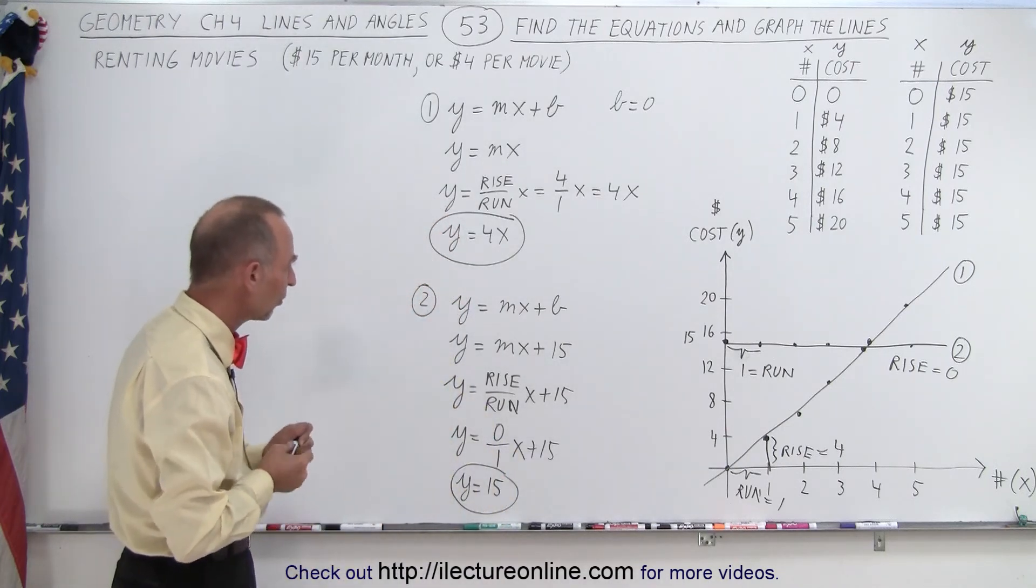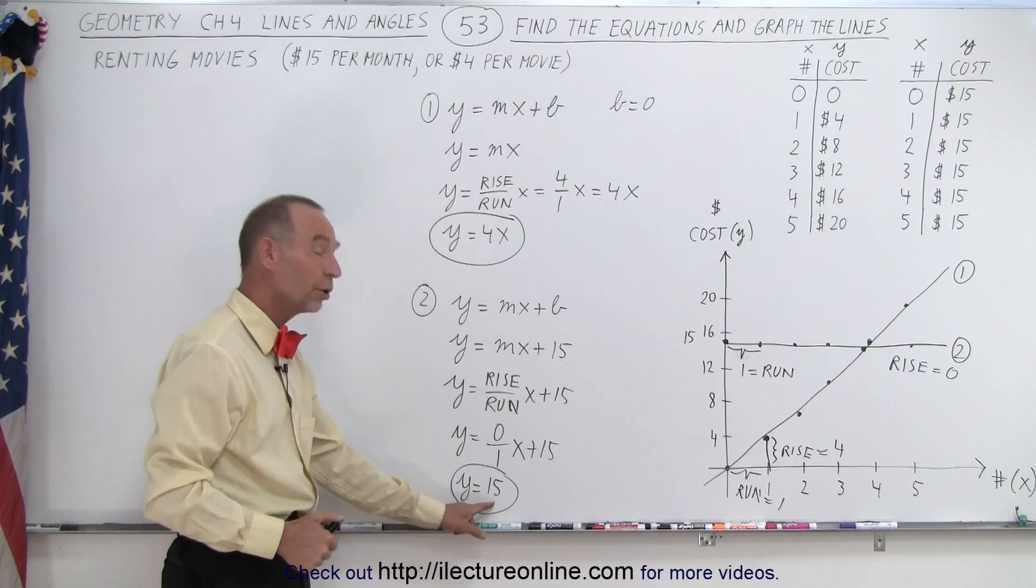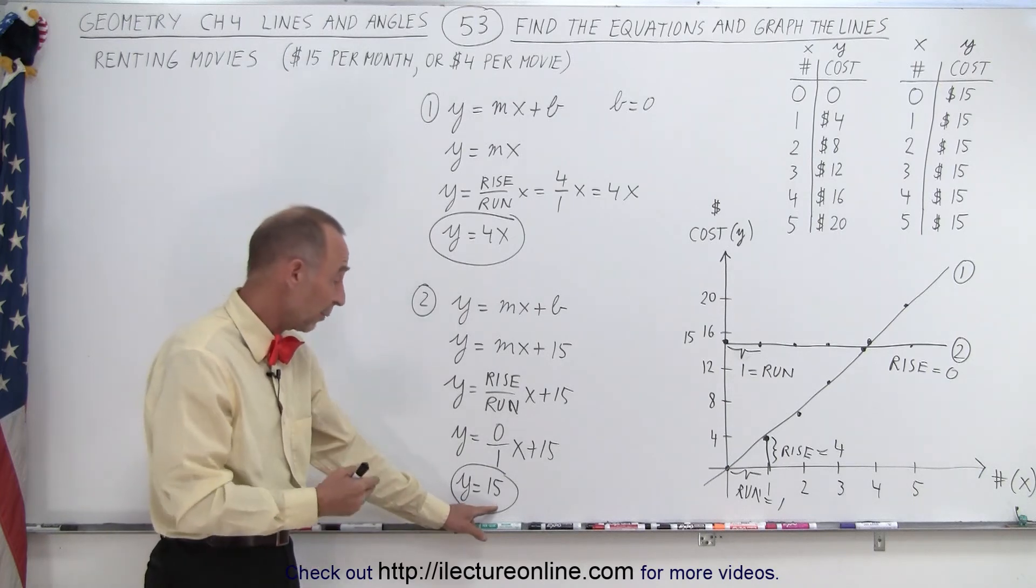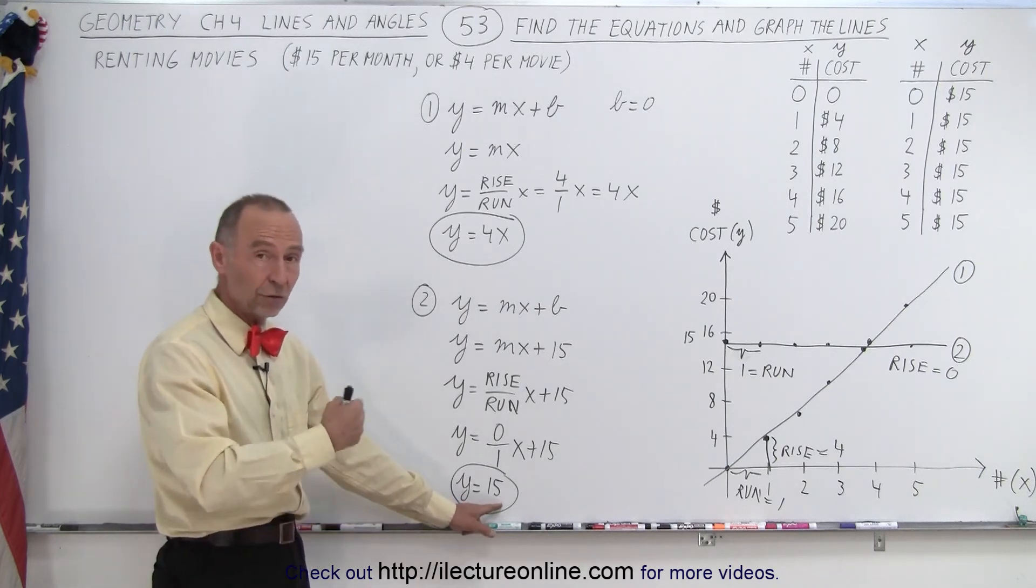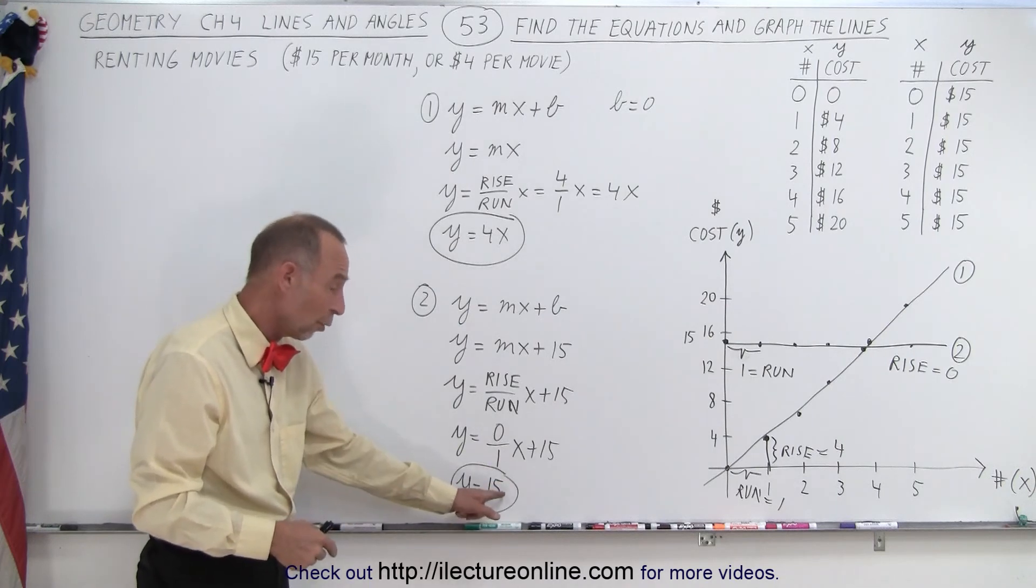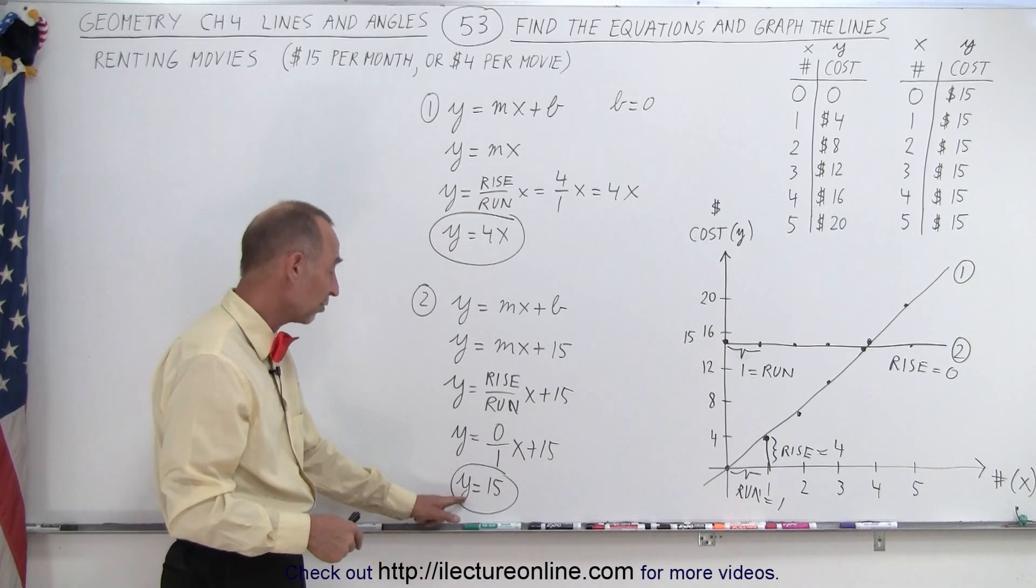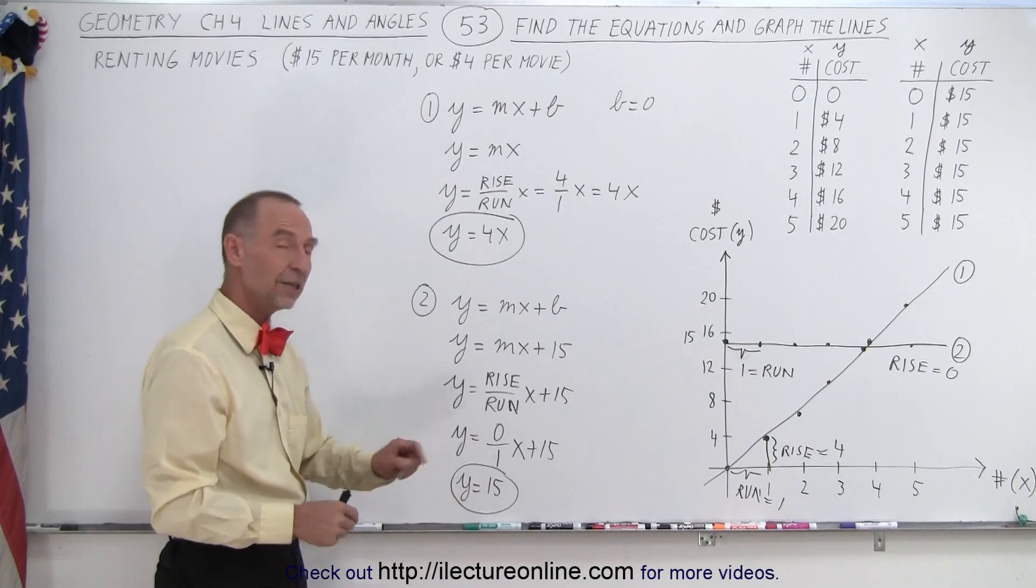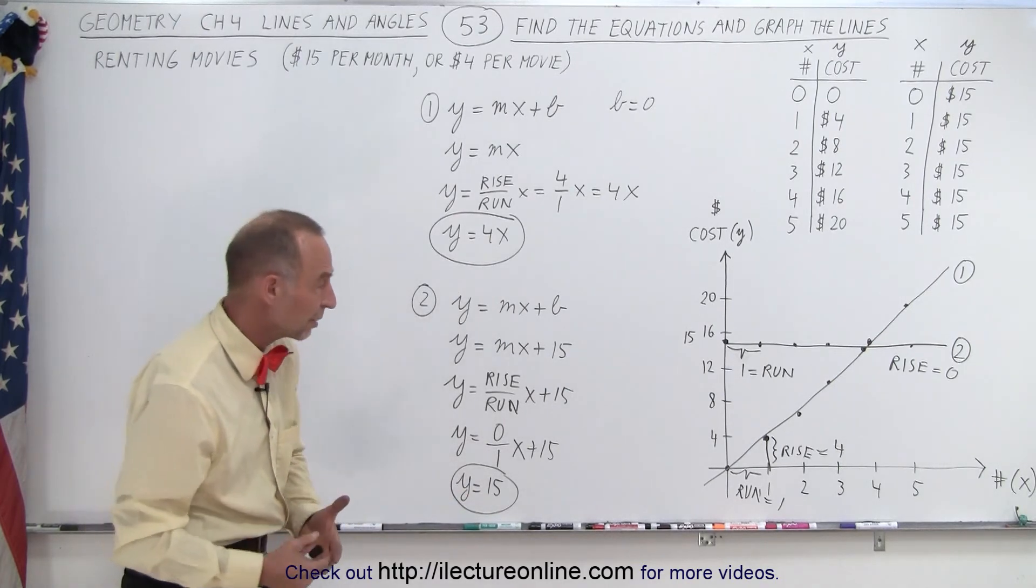So there I have the two equations. So here I can see that regardless of the number of movies I rent, x can be one, two, three, four, five, whatever it is, it makes no difference because there's no x in the equation. So y is always fifteen. I will always pay fifteen dollars, regardless of what the quantity of x is.